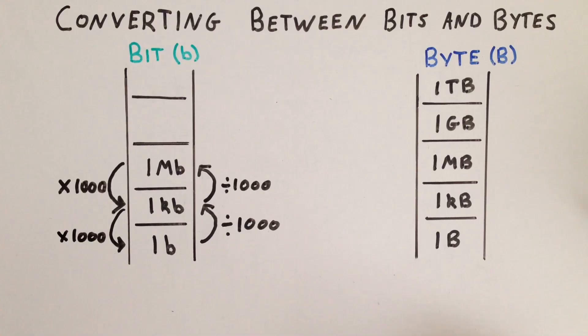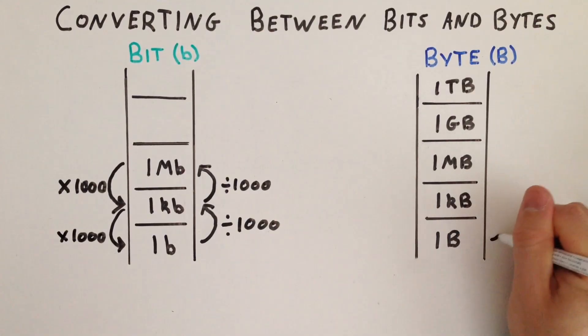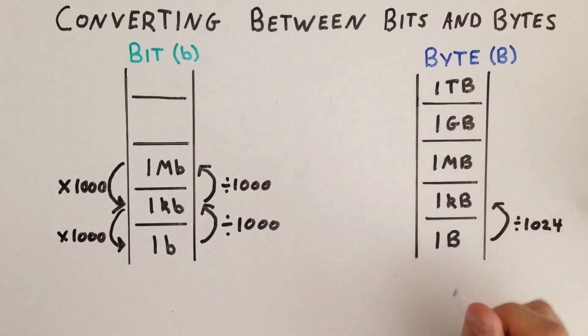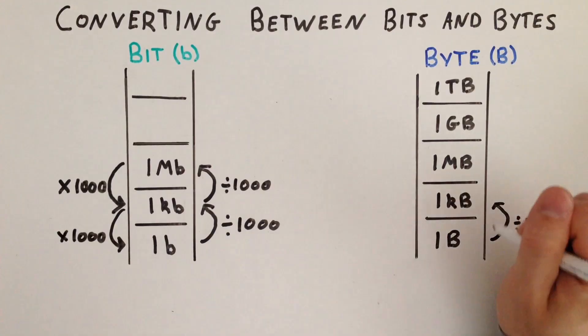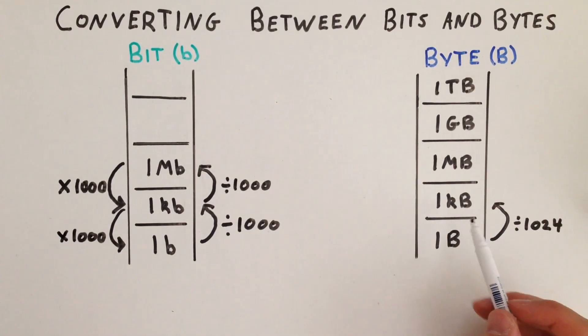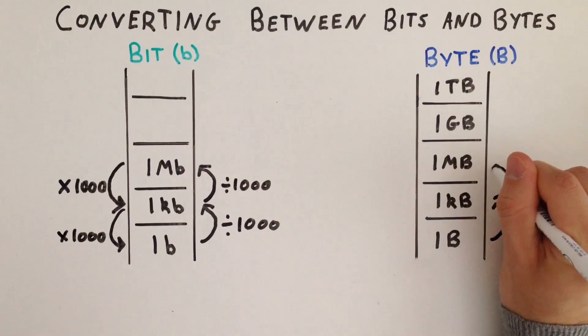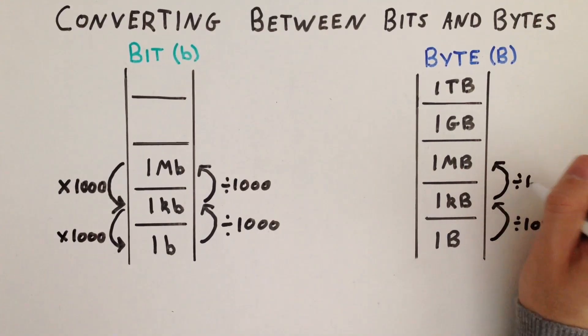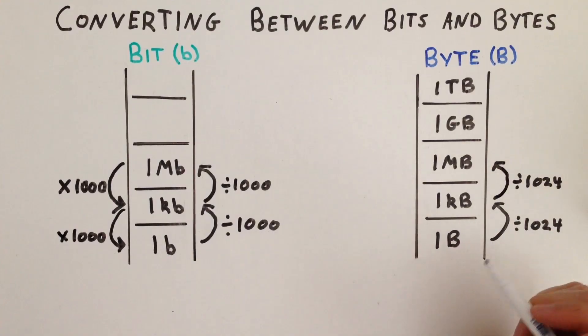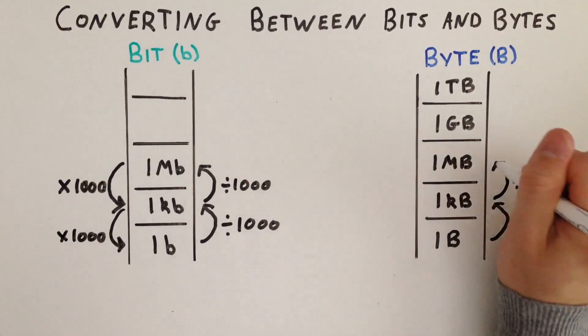The process is very similar for the byte ladder, except the magic conversion number is 1,024. So if we start at the base of the byte ladder and climb up, we need to divide by 1,024 for each level. So 1 byte equals 1 divided by 1,024 kilobytes. Again, we divide going up the ladder. So 1 kilobyte equals 1 divided by 1,024 megabytes, and so on.